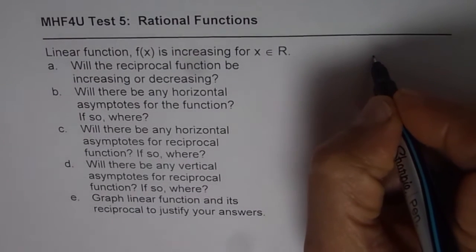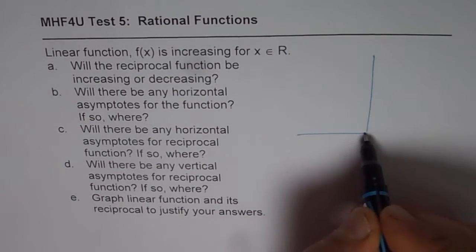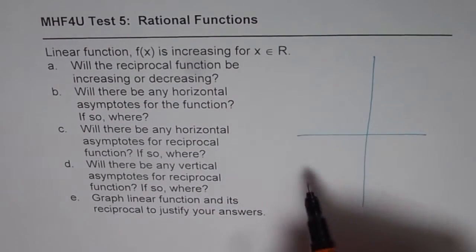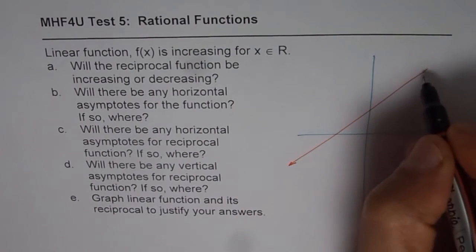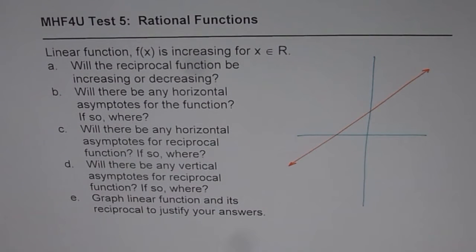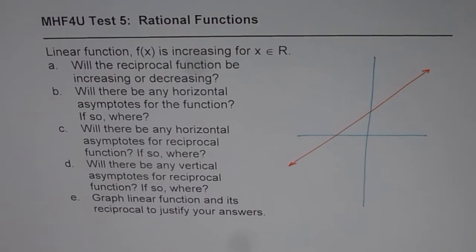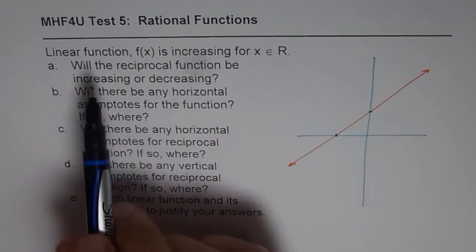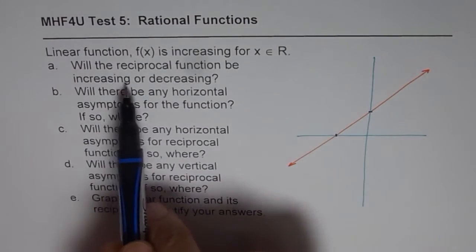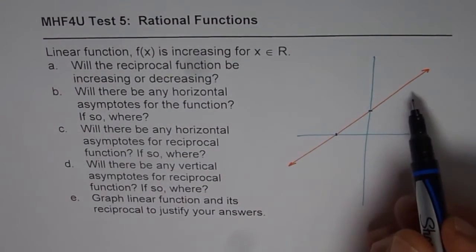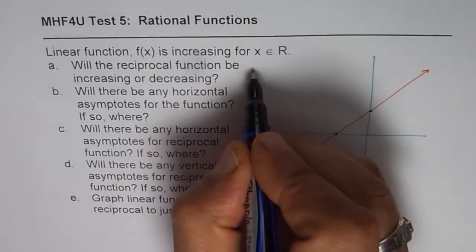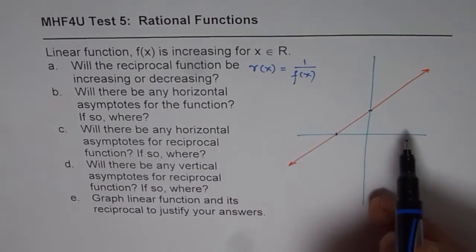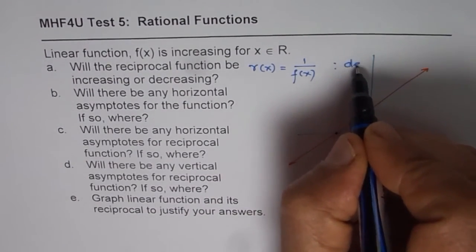This is a very basic question on reciprocal functions. We are talking about a linear function which is increasing for x belonging to real numbers, so we could draw any line like this — a linear function which is increasing. As you can see, it has an x-intercept and a y-intercept. Now let's answer these questions one by one. Will the reciprocal function be increasing or decreasing? If the function is increasing, the reciprocal should be decreasing. We define the reciprocal function r(x) = 1/f(x). If f(x) is increasing as we move left to right, r(x) should be decreasing. So the first answer is: decreasing.